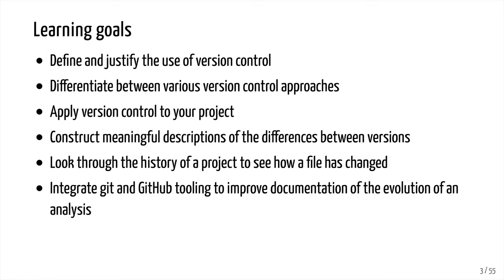The learning goals for today are to define and justify the use of version control, talk about different approaches to version control, and use two projects to apply version control. We'll think about documenting changes and differences between versions of our repositories, look through the history of a project to see how a file has changed, and start using Git with our big Kozich reanalysis project that we'll be working with for the rest of the tutorial series.